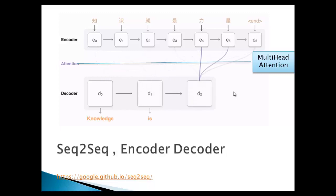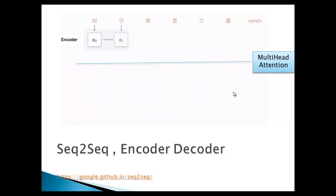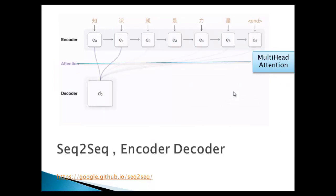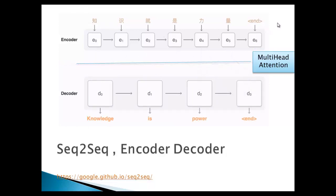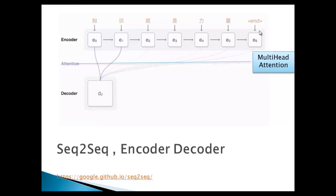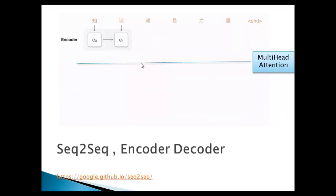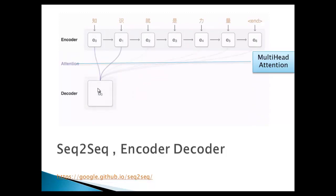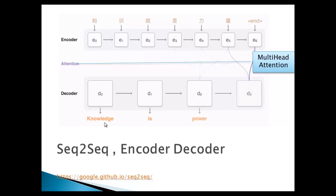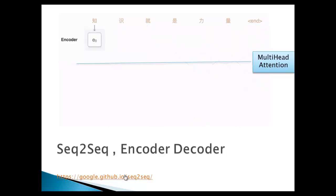Generally, sequence-to-sequence tasks are performed using an encoder-decoder model. The basic idea is that the encoder takes a sequence of input — here it is taking German — and converts it to some intermediate representations somewhere inside. It then passes these encoded mathematical representations to the decoder, and the decoder converts this into output text, for example 'knowledge is power.' I have taken this snippet from a reference site where you can go and understand more about sequence-to-sequence encoder-decoder.